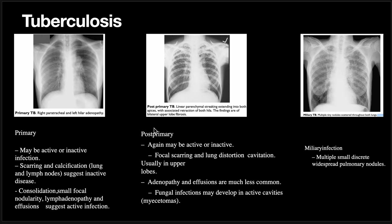Coming to TB: TB can be primary TB, post-primary TB, or secondary TB, or it could be a miliary infection. In primary TB there can be an active infection or an inactive infection. If we find scarring and calcification, it suggests inactive disease. If we find consolidation with lymph nodes, effusion, and small nodules, it suggests active infection. In this X-ray we can see right paratracheal and left hilar lymph nodes, suggesting multiple lymph nodes consistent with primary active TB.